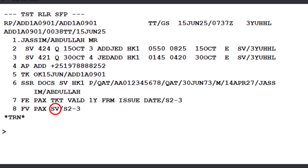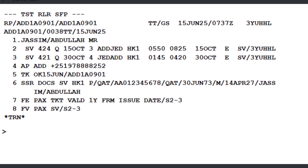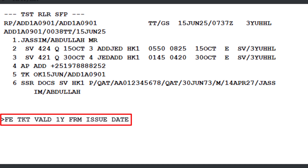Saudi Airlines (SV) is automatically set as the validating carrier. To add it manually, enter FV (Validating Carrier identifier) followed by SV for Saudi Airlines, and press Enter. The FE (Endorsement) field may auto-populate with airline-provided text. To modify or add manually, enter FE (Endorsement identifier) followed by your custom text and press Enter.